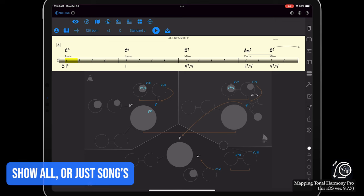You can also toggle between showing all available functions in the current key with the I button or just the chords that belong to the song currently loaded.